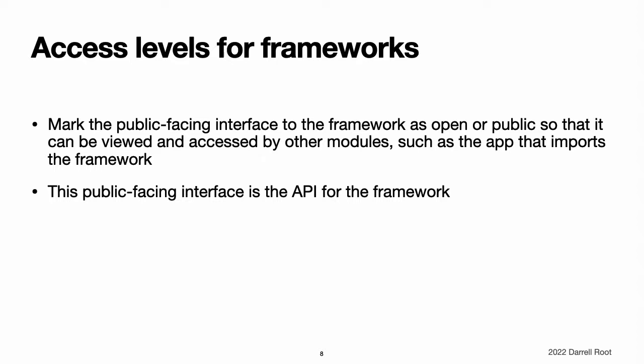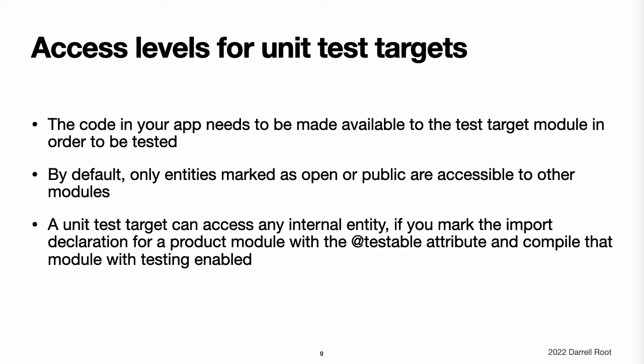Note, any internal implementation details of your framework can still use the default access level of internal, or it can be marked as private or file private if you want to hide them from other parts of the framework's internal code. You need to mark an entity as open or public only if you want it to become part of your framework's API. Access levels for unit test targets. When you write an app with a unit test target, the code in your app needs to be made available to that module in order to be tested. By default, only entities marked as open or public are accessible to other modules. However, a unit test target can access any internal entity if you mark the import declaration for a product module with the testable attribute and compile that product module with testing enabled.